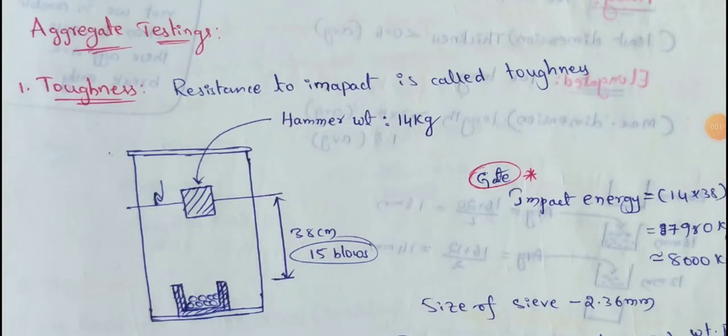Next topic: Aggregate Testing. I choose Road Construction Works. In road construction work, aggregate is one of the important components — it is a main component.